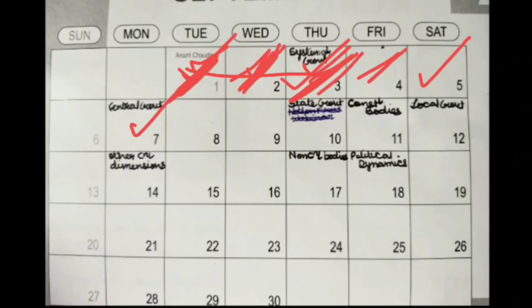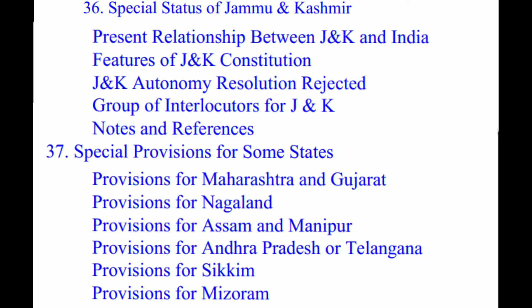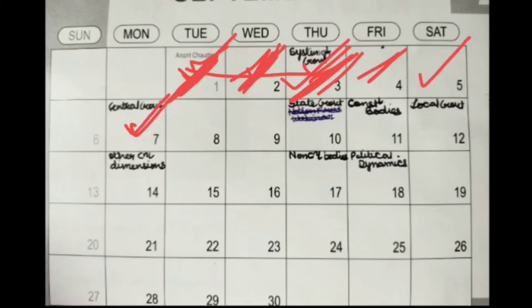If there's a question about what has changed or what the differences are, you need to know the older version as well, which is chapter 36. So chapters 36 and 37 are done on day seven, along with chapters 23, 24, and 25. This gives you one week's edge.